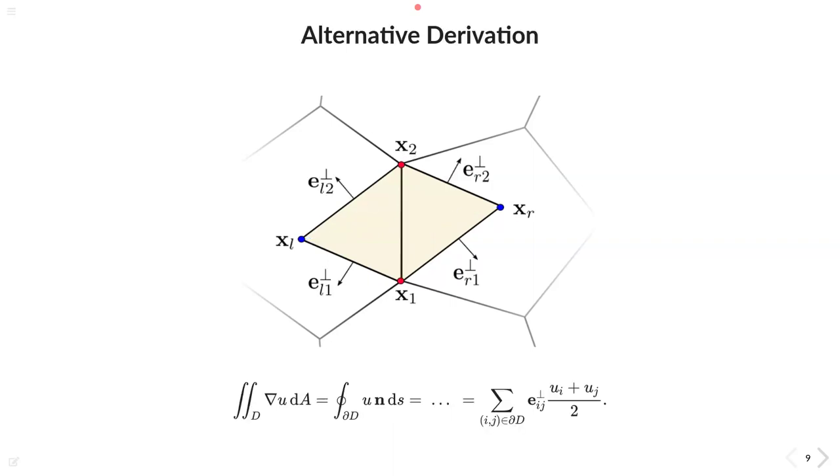Because by making use of Stokes' theorem, we can express the gradient as the sum of the orthogonal edges, scaled by the function value interpolated at the edge midpoints. And all of these can easily be obtained and give us a nice and simple gradient.